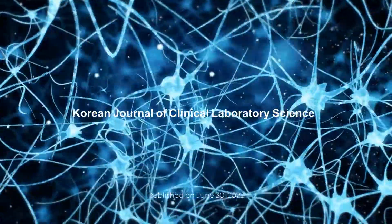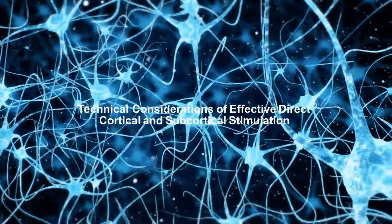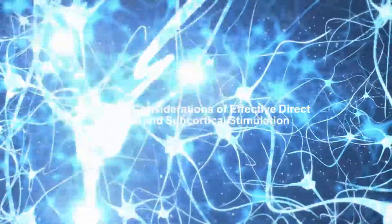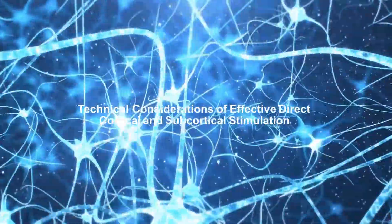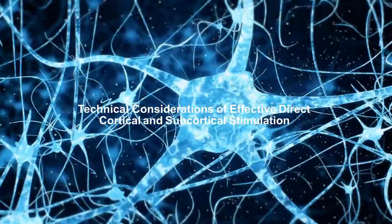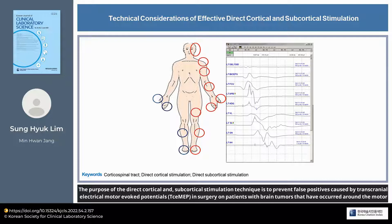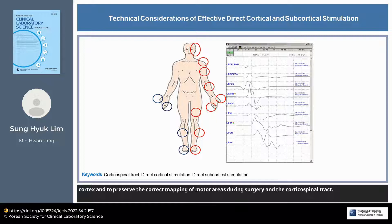Korean Journal of Clinical Laboratory Science article. The title is 'Technical Considerations of Effective Direct Cortical and Subcortical Stimulation.' The purpose of this technique is to prevent false positives caused by transcranial electrical motor evoked potentials in surgery on patients with brain tumors occurring around the motor cortex, and to preserve correct mapping of motor areas and the corticospinal tract during surgery.